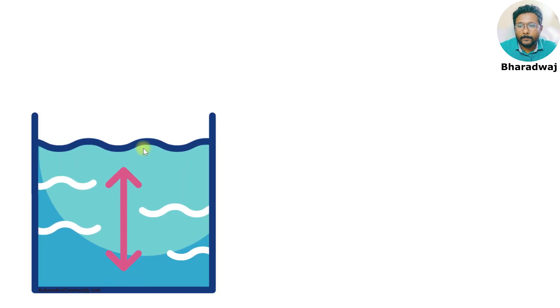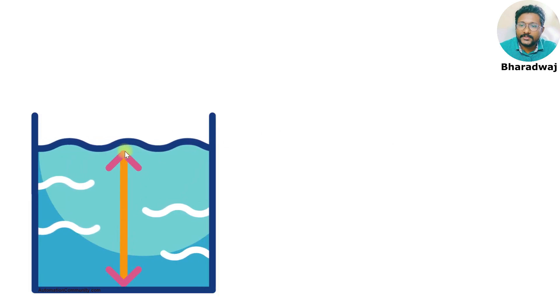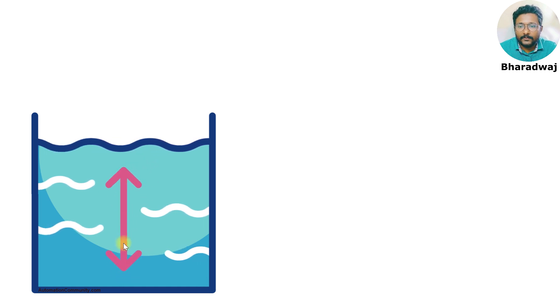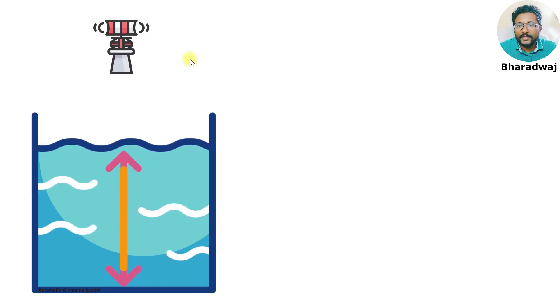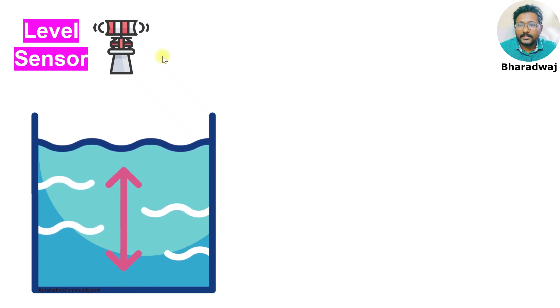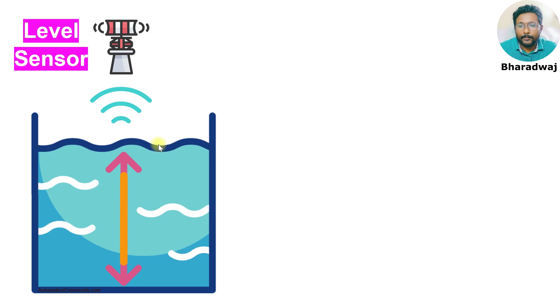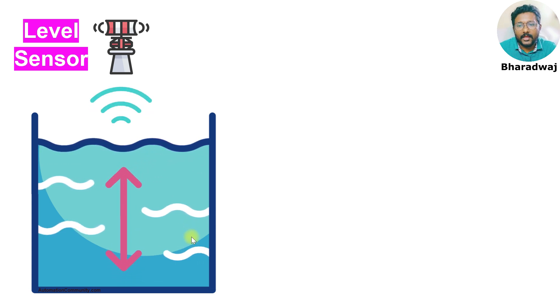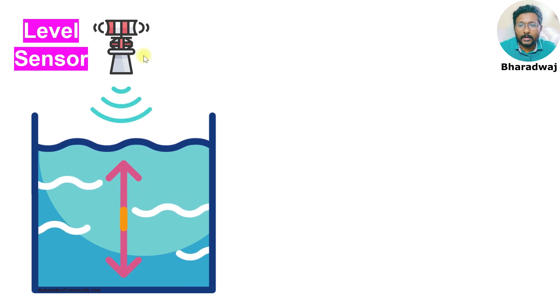In this video, I will discuss one example. Suppose there is a tank and I want to measure the tank level. For that purpose, I need one level sensor. This level sensor measures the tank level and generates one output signal.